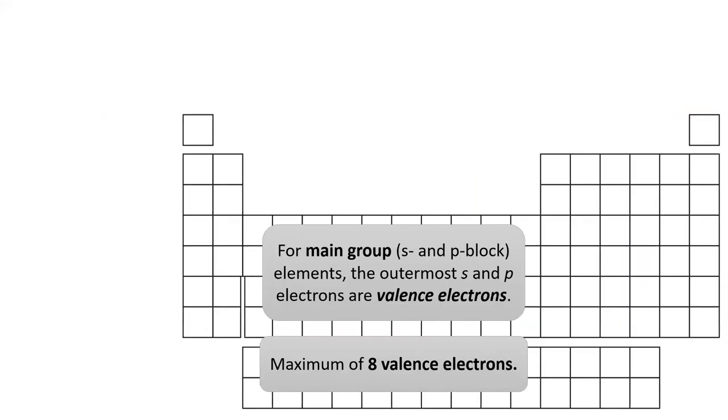The main group elements can have a maximum of 8 valence electrons, since this is the number of electrons which fit into the S and P subshells. In general, elements try to obtain 8 valence electrons during reactions. The number of valence electrons increases as we go left to right across the table.